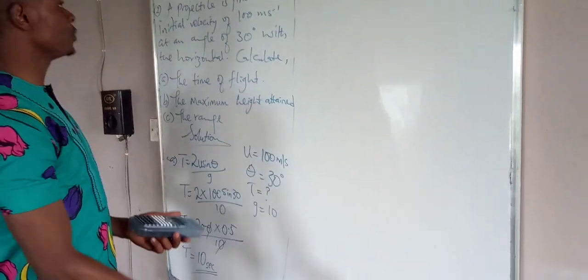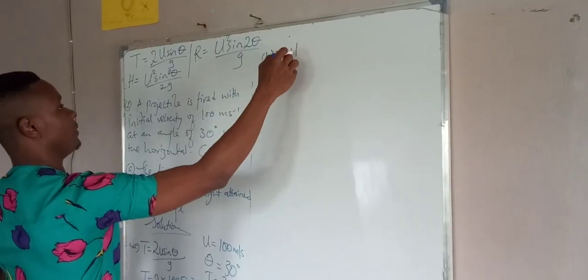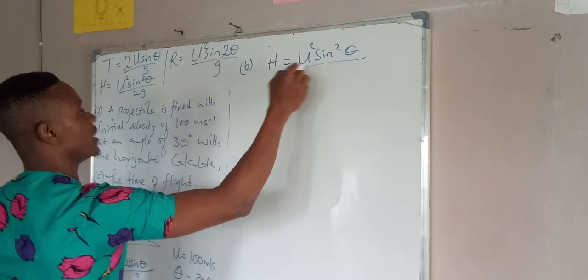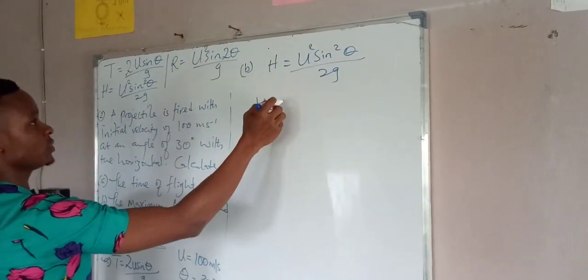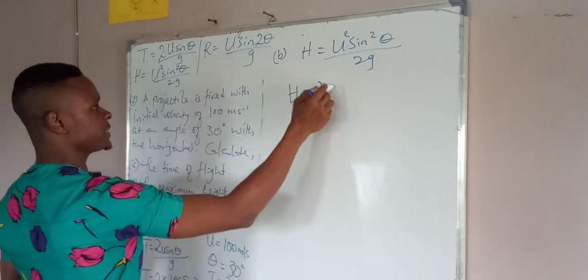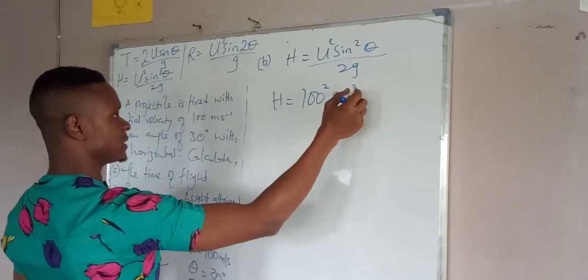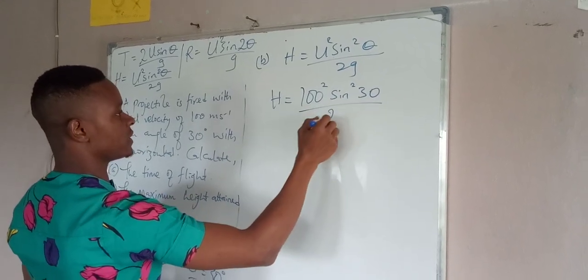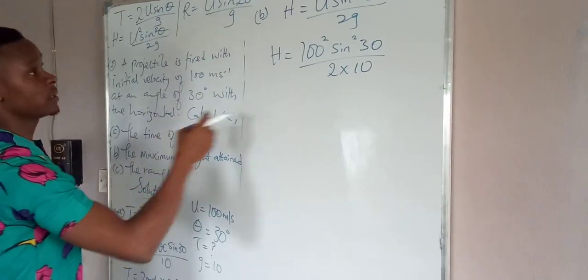We go straight to the next one which is the maximum height. Our h is u squared sin squared theta all over 2g. Substitute the values: h is equal to 100 squared sin squared 30 all over 2 times 10.